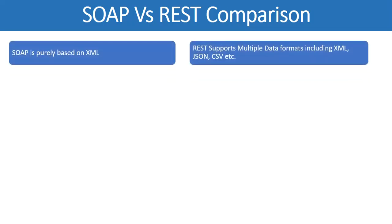If we talk about the comparison of the two types of web services, SOAP and REST, the first major difference is that SOAP is purely XML-based, while contrary to SOAP, REST supports multiple data formats including XML, JSON, CSV, etc.